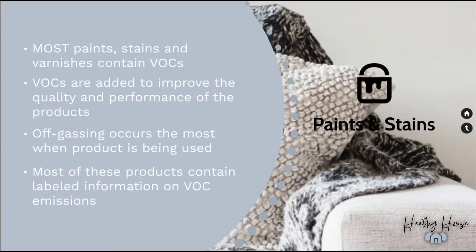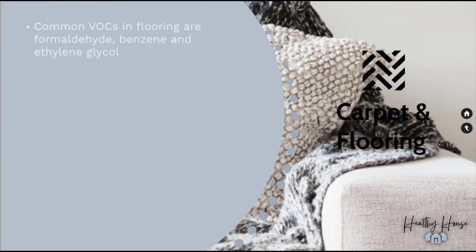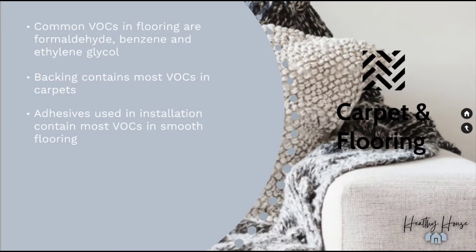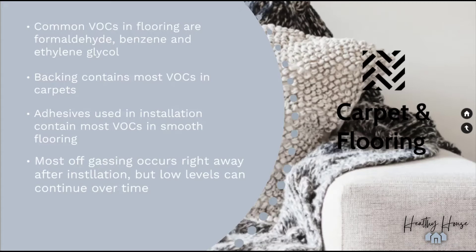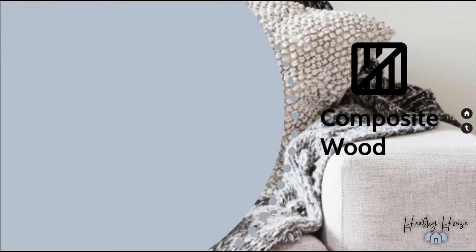Paint and stain products can emit low levels of VOCs constantly, and most list the level of VOCs right on the product label. Another area is carpet and flooring: formaldehyde, benzene, and ethylene glycol are all common VOCs emitted from flooring and carpet. In carpet, the main problem is the backing; in flooring, the culprit is often the adhesives used in installation or manufacturing. Most flooring products off-gas the most right away, but low levels can continue over time.